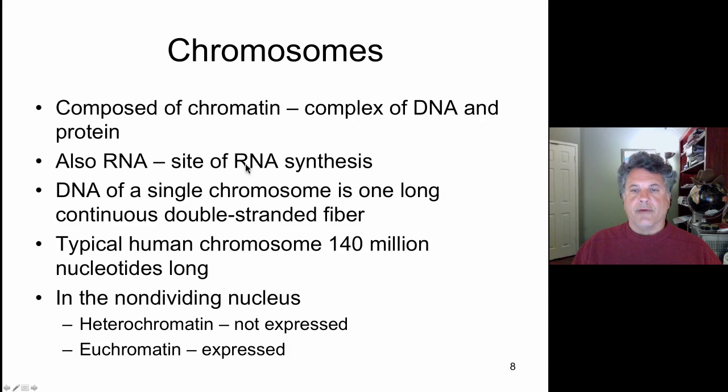We know that chromosomes are the site of RNA synthesis, where genes are transcribed into RNA. In eukaryotes, DNA of a single chromosome is one long, continuous, double-stranded DNA molecule. Every chromosome is a single molecule of DNA and associated proteins. Chromatin is a complex of DNA and protein. The typical human chromosome is about 140 million nucleotides in length. In the non-dividing nucleus, we can divide chromatin into two states: heterochromatin, which is highly condensed and not expressed, and euchromatin, which is less condensed, more diffuse, and is expressed. Genes found in heterochromatin are not turned on, whereas genes in euchromatin can be expressed.